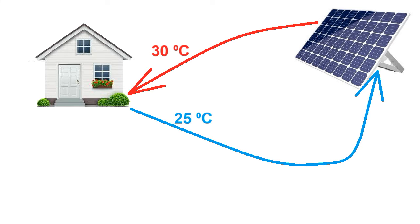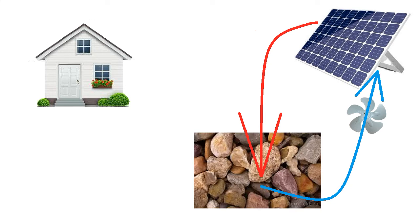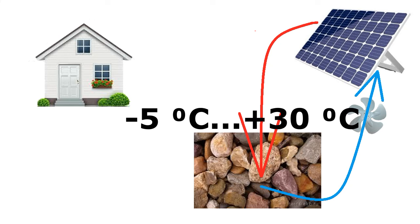The second mode of operation of the fan is the circulation of the warm air from the solar panels not through the house, but through this pit with stones, the temperature of which will change within a certain range during the 7 months of the heating season.